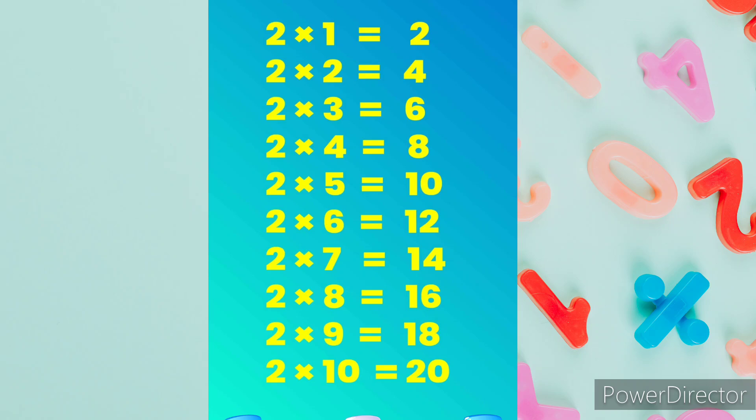2 1s are 2, 2 2s are 4, 2 3s are 6, 2 4s are 8, 2 5s are 10.